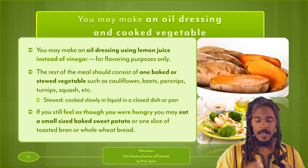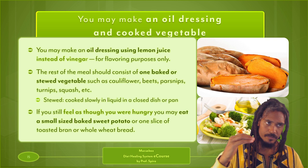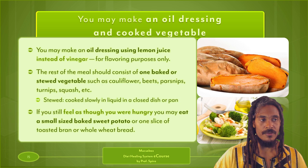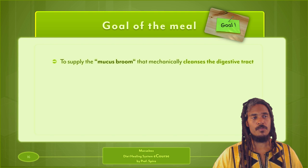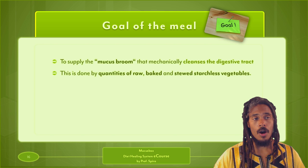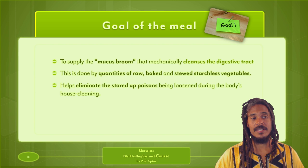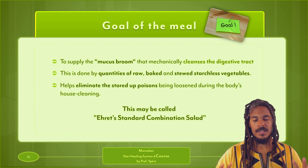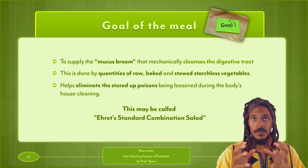The goal of the vegetable meal is to supply the mucus broom that mechanically cleanses the digestive tract. This is done by quantities of raw, baked, and stewed starchless vegetables, which help eliminate the stored-up poisons being loosened during the body's house cleaning. This may be called Ehret's standard combination salad. In general we have fruit meals, vegetable meals, and Ehret's two-course meal that combines fruit and vegetables in the same meal.